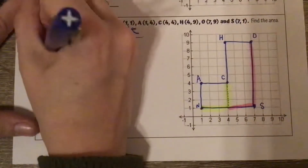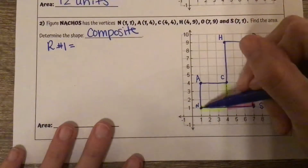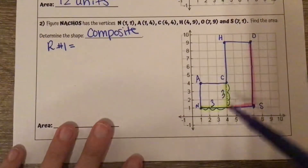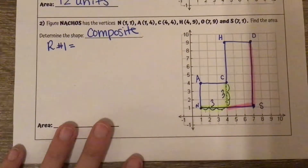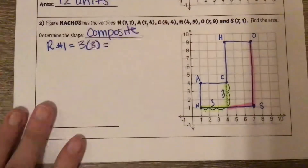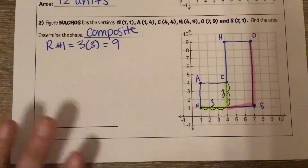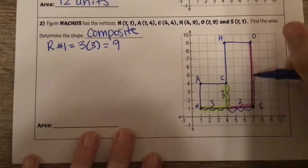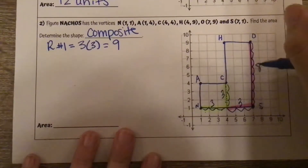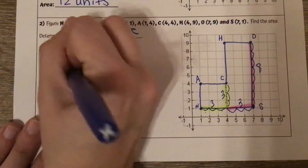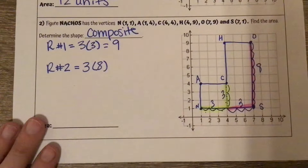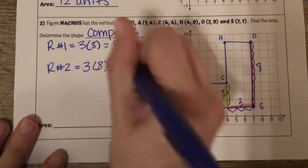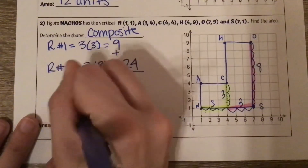For rectangle number one, we have a base of three and a height of three — you can count the boxes: one, two, three across and one, two, three up. So for rectangle number one, three times three is nine. For rectangle number two, the base is three and the height is eight. Three times eight gives us 24. So our total area is nine plus 24, which equals 33.